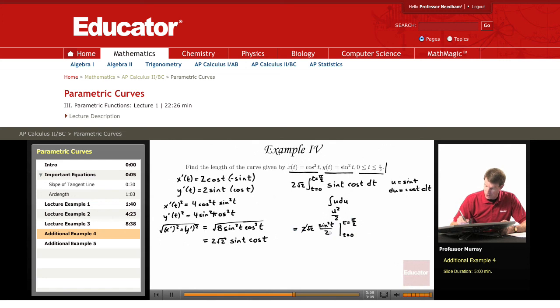And those 2's cancel each other so we get √2 times the sine of π/2 squared, well that's just 1, minus the sine of 0 squared which is 0. So our arc length is just √2.